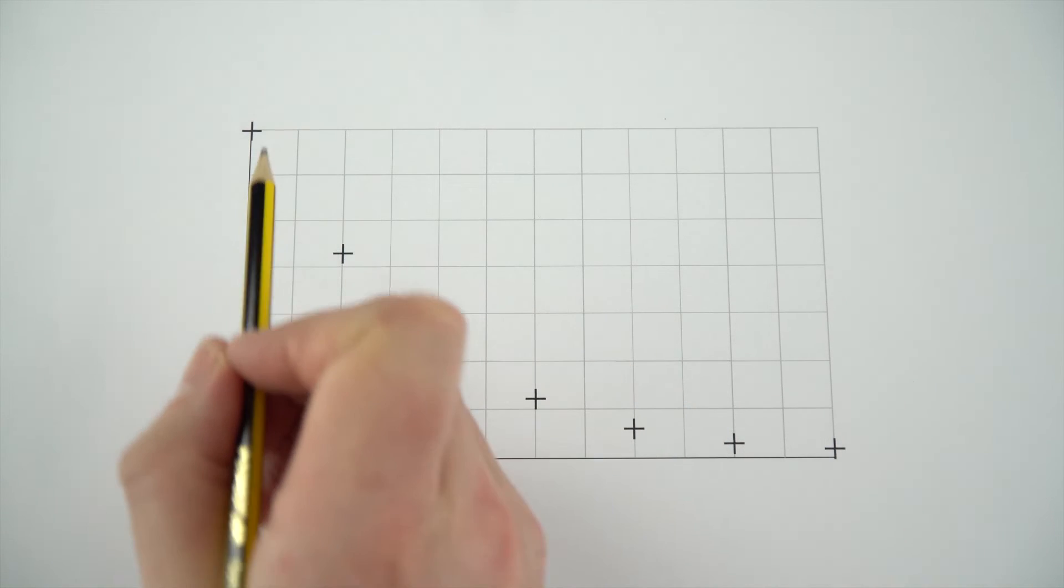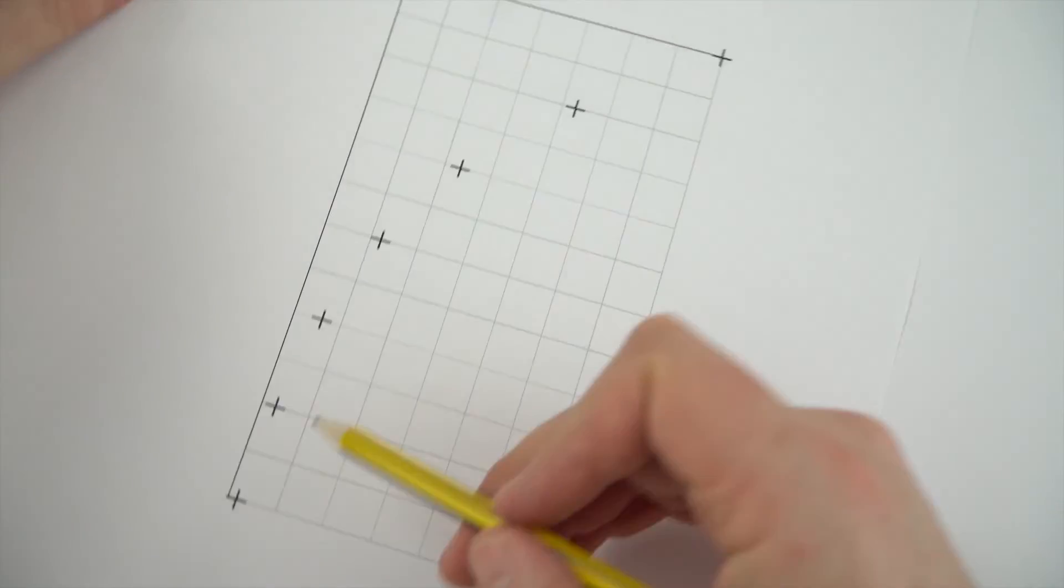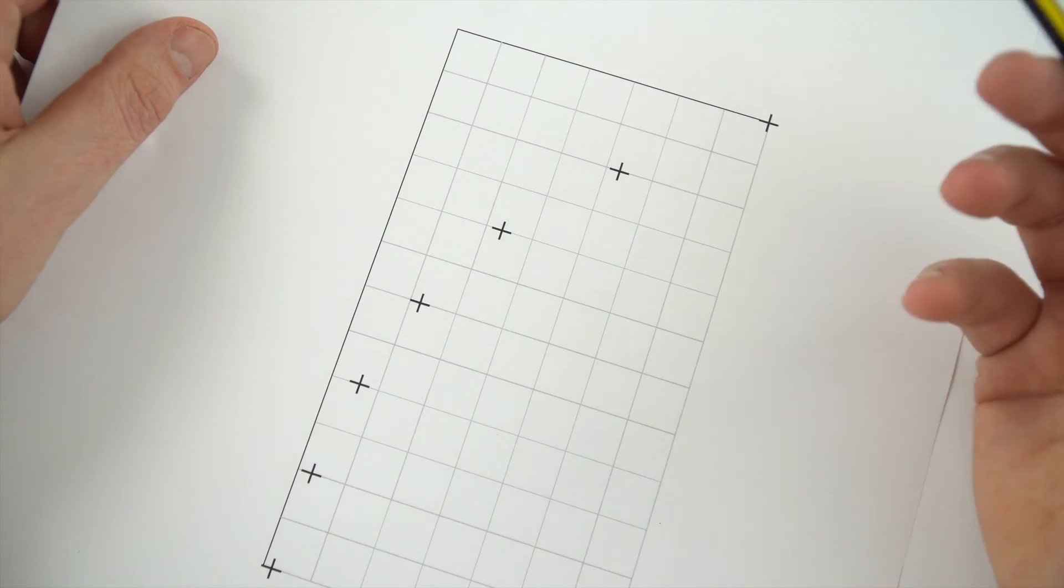Sometimes you have data like this and it's actually really awkward to get your hand to draw a nice curve there. So the best thing to do now is to turn your paper around so that your hand is on the inside of that curve and then again just draw your line of best fit.